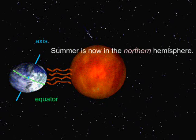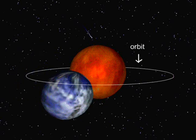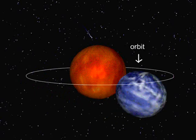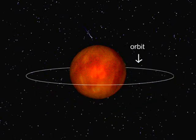It is summer in the Northern Hemisphere. Because the Southern Hemisphere is receiving less direct heat and light, it is winter in the Southern Hemisphere. The Earth revolves around the Sun, and this path is Earth's orbit.